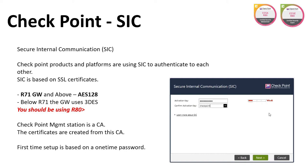Hi, welcome to my channel. My name is Magnus and today we're going to talk about Secure Internal Communication, or in short, SIC. CheckPoint products and platforms use SIC to authenticate to each other. SIC is based on SSL certificates. When you first install your management server, this includes the CA, or Certificate Authority, also mentioned as ICA — Internal Certificate Authority. This is what creates the certificate used for SIC.